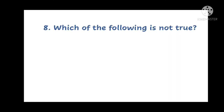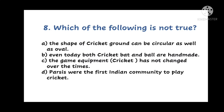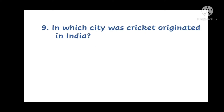Question number 8. Which of the following is not true? A. The shape of cricket ground can be circular as well as oval. B. Even today, both cricket bat and ball are handmade. C. The game equipment has not changed over the times. Or D. Parsis were the first Indian community to play cricket. Which is not true?